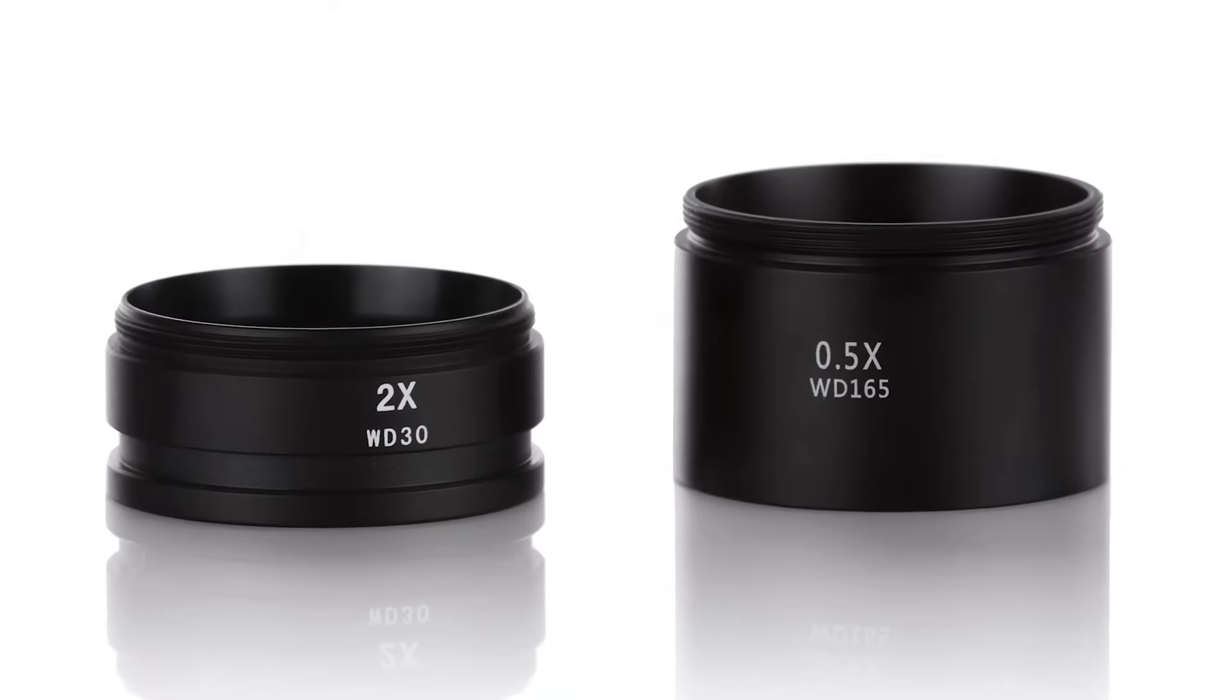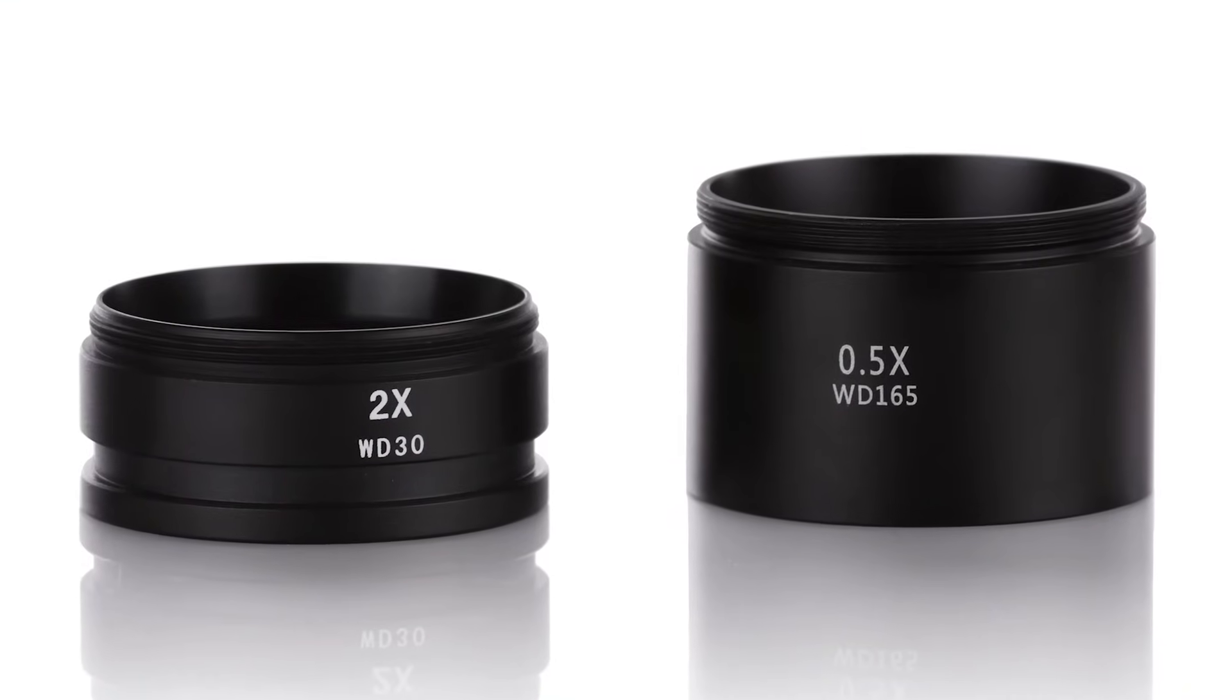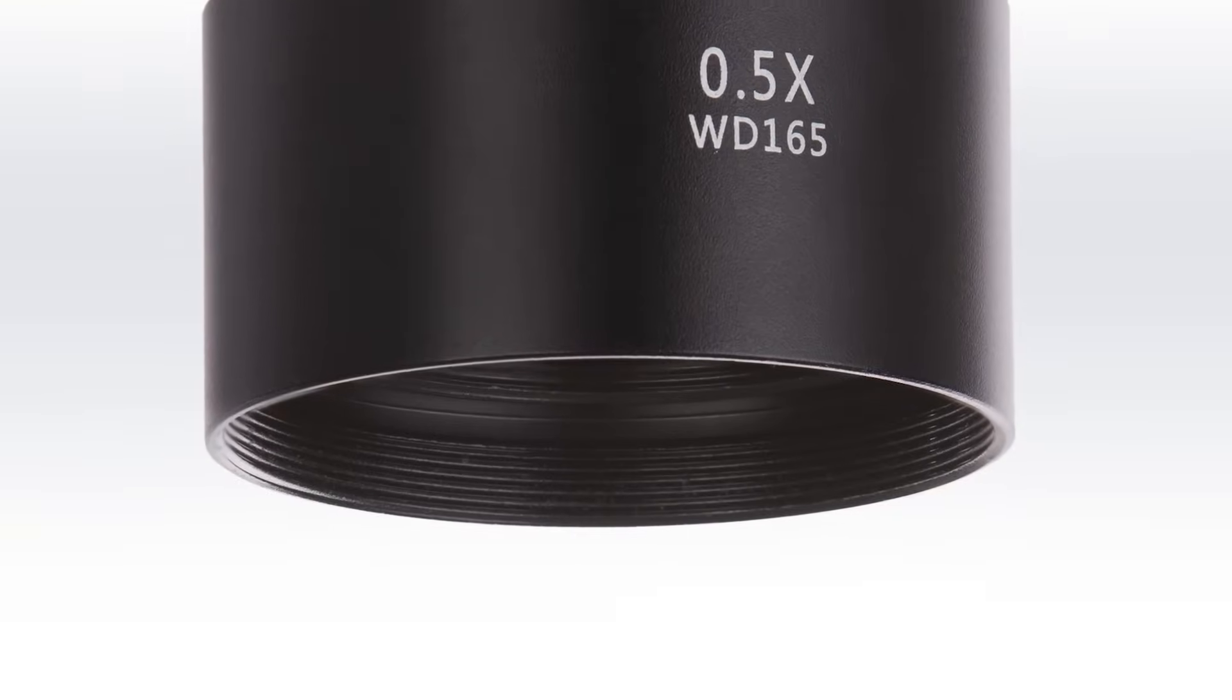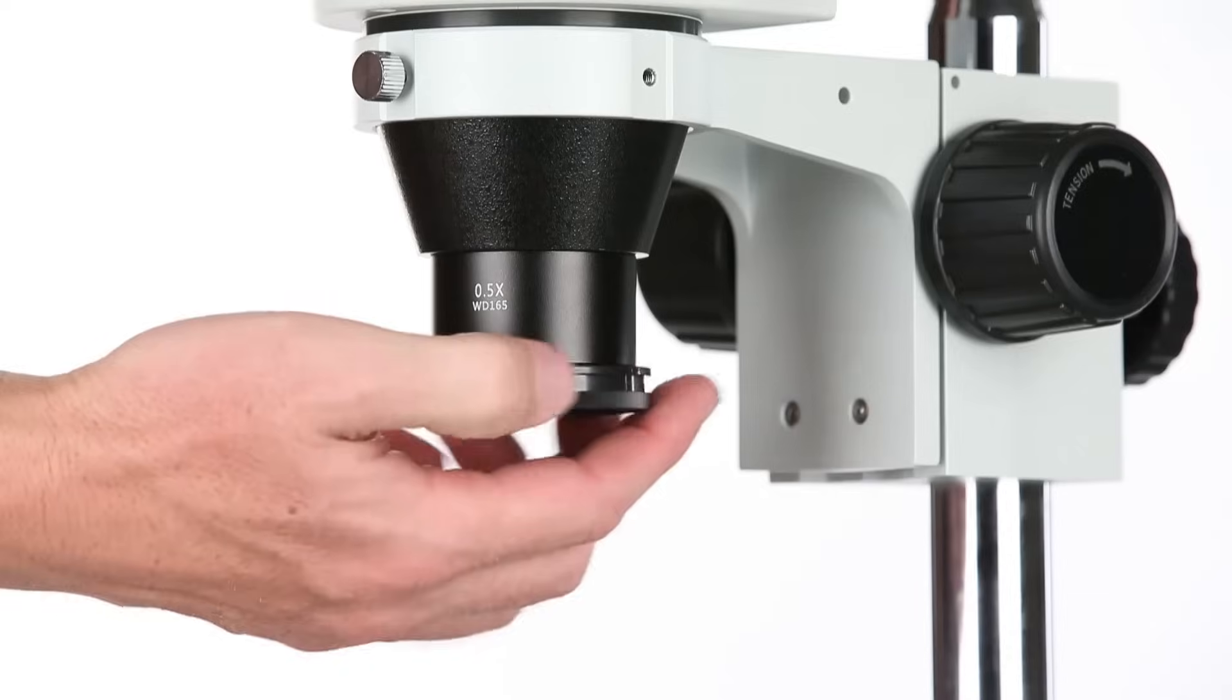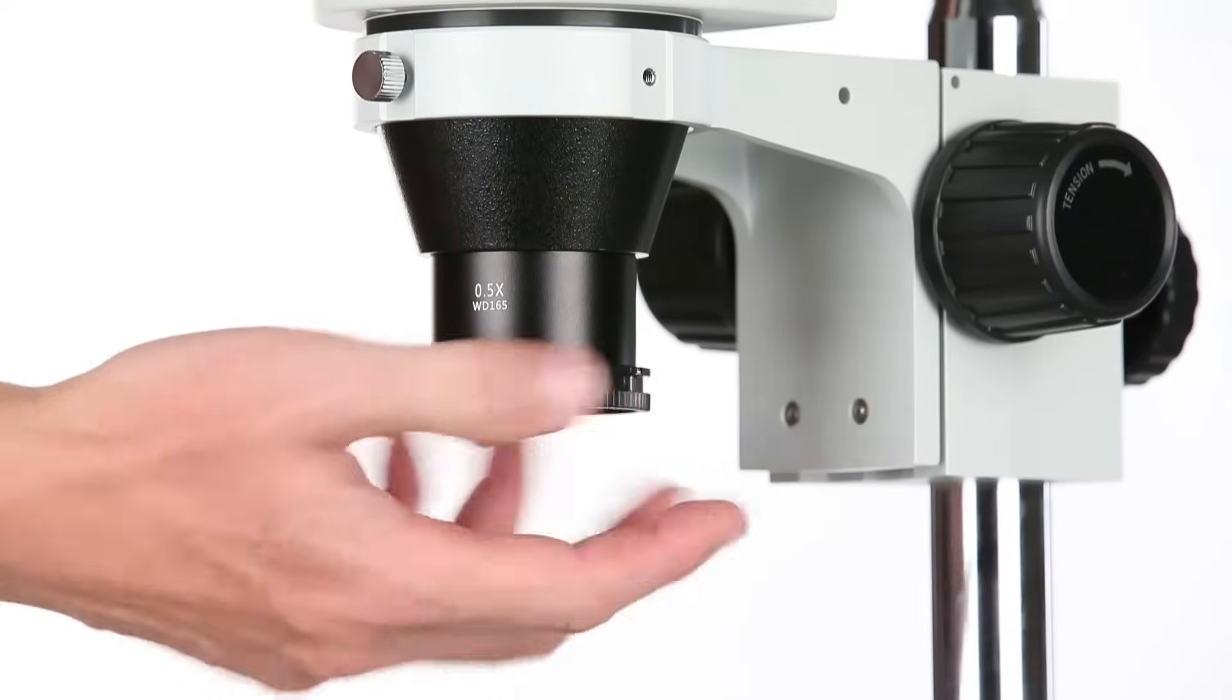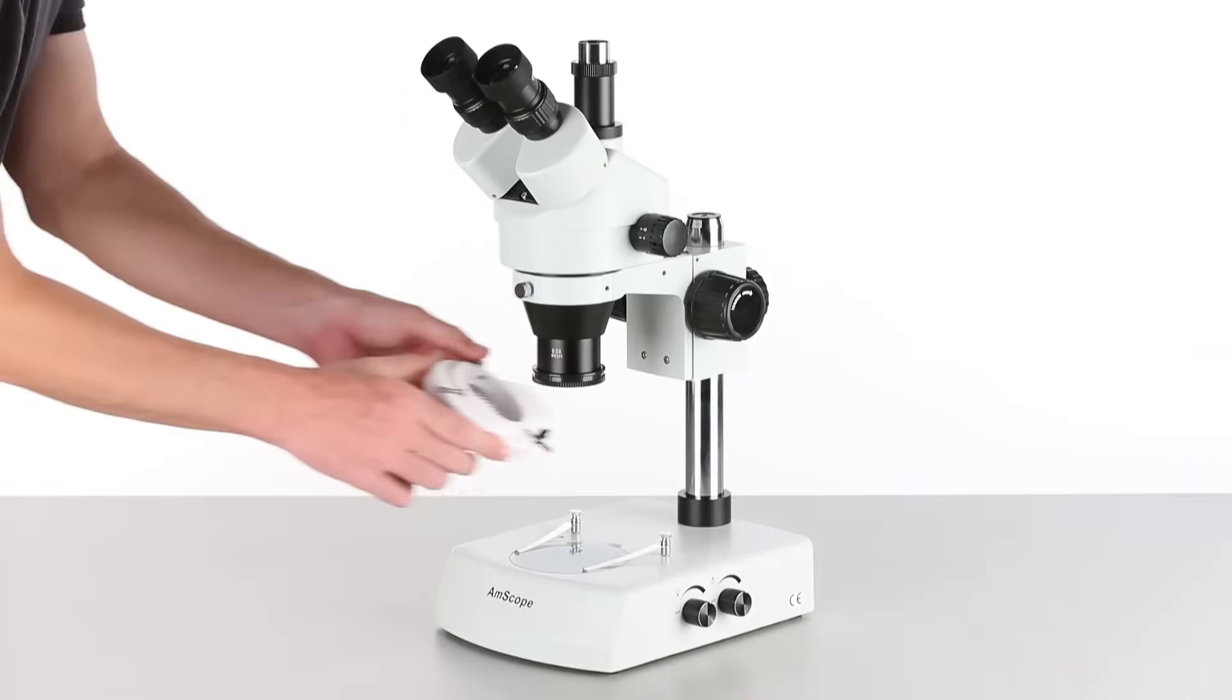A ring light can also be attached to each of the Barlow lenses. The 0.5x Barlow lens has a threaded port. Simply screw on the threaded adapter ring, and then mount the ring light.